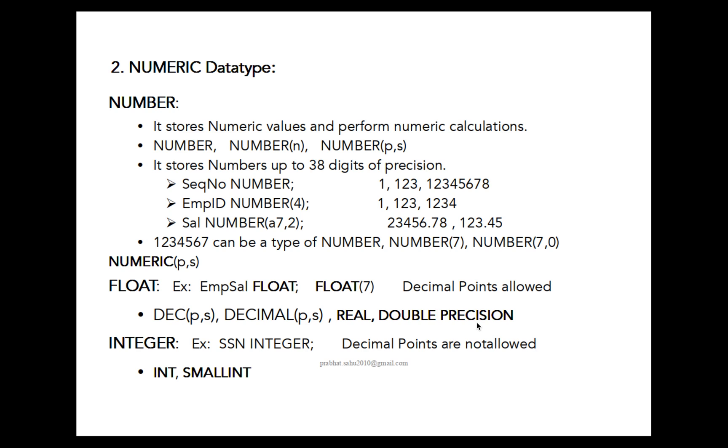Next, INTEGER. INTEGER without size, without data type size you can provide. I give an example that SSN number as the INTEGER type. Here decimal points are not allowed, meaning after decimal point you can't give any floating point number or decimal point number. You can use INT or SMALLINT for those types.